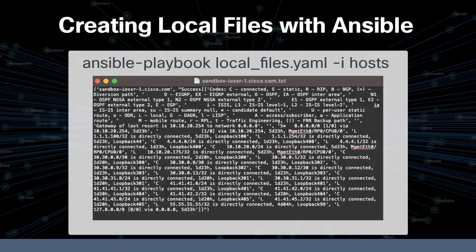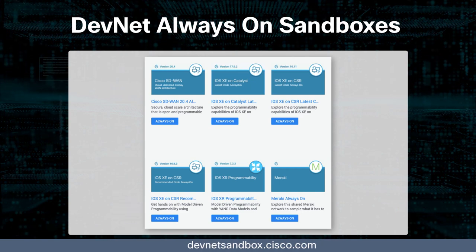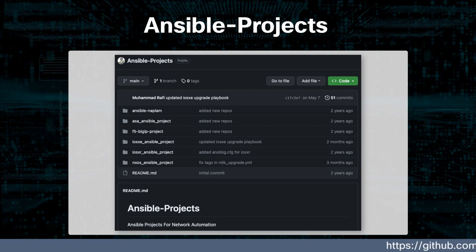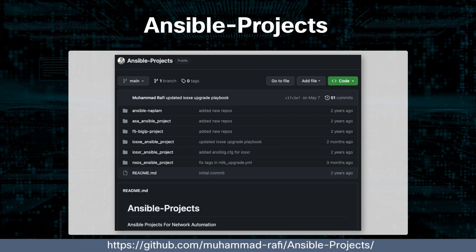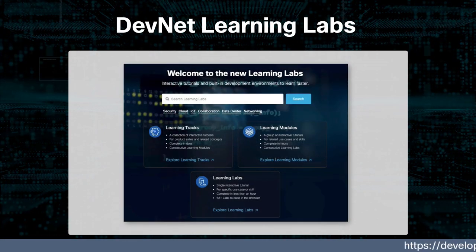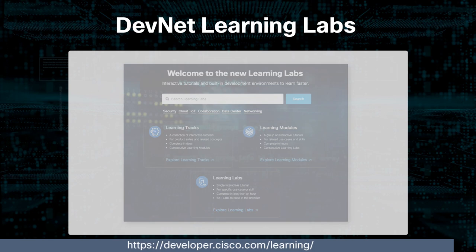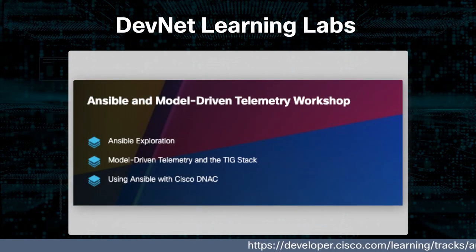Most of the demos in this video involved devices in the free DevNet always-on sandboxes. For an extensive list of working Ansible files for IOS XE, IOS XR, NX-OS, and ASA projects — including playbooks, variables, configs, and scripts — check out the Ansible Projects repo from Muhammad Rafi. The new learning labs at developer.cisco.com have an abundance of free Ansible offerings; searching for Ansible you can find various learning modules.